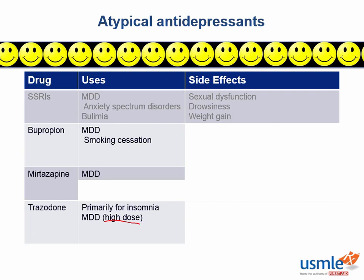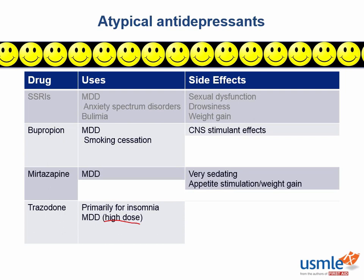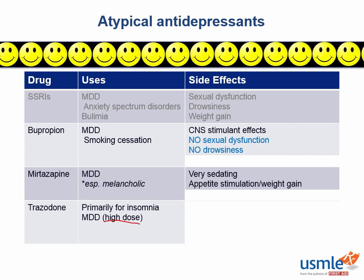Bupropion and mirtazepine are kind of like yin and yang when it comes to side effects. While bupropion almost acts like a stimulant, mirtazepine promotes both drowsiness and increased appetite. Which one's better depends on how that particular patient experiences depression. Bupropion's benefit is that it causes neither sexual dysfunction nor drowsiness, so it may be a great choice for patients who really don't like either of those effects. Mirtazepine works really well for patients with classic melancholic depression, where they don't sleep and they don't eat.